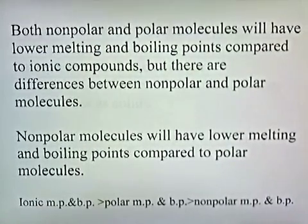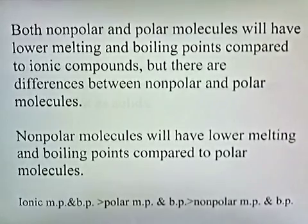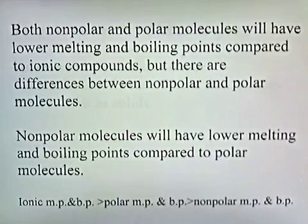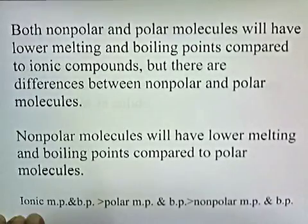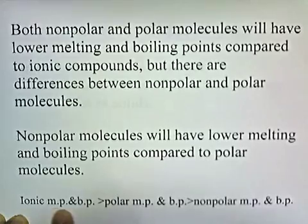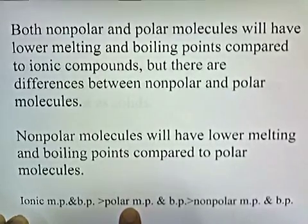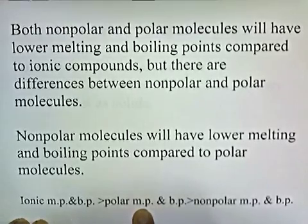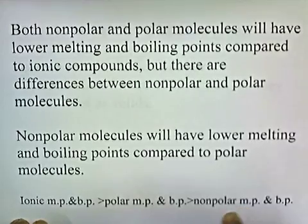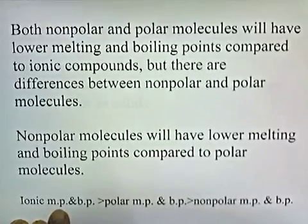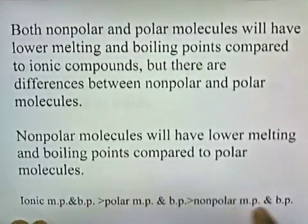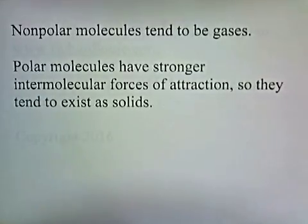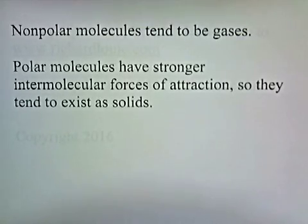Both non-polar and polar molecules will have lower melting and boiling points compared to ionic compounds, but there are differences between non-polar and polar molecules. Non-polar molecules will have lower melting and boiling points compared to polar molecules. So the order is: ionic compounds have the highest melting and boiling points; polar molecules have weaker bonds, so they melt and boil more easily — water is an example of a polar compound; and something non-polar, such as gasoline, evaporates very easily. It requires lower and lower temperatures as you go from ionic to polar to non-polar, because the bonds get progressively weaker. Non-polar molecules tend to be gases, since their force of attraction is weaker. Polar molecules have stronger intermolecular forces of attraction, so they tend to exist as solids or liquids.